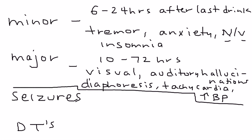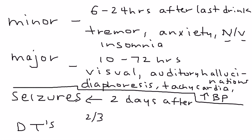All this is pretty severe, but it gets worse. Approximately two days after, if the alcohol withdrawal progresses, the patient can start to develop seizures. The fourth and final, most serious stage — depending on two to three to about ten days after the last drink — can develop DTs.